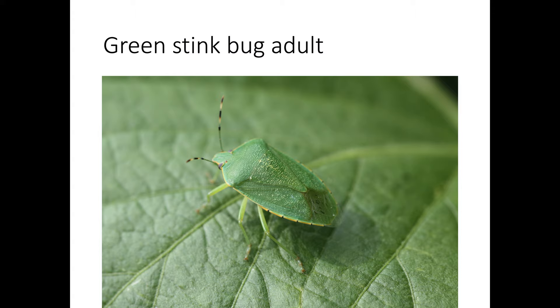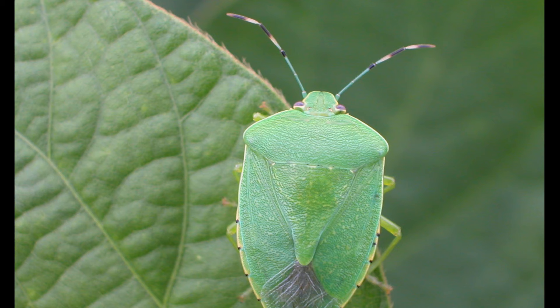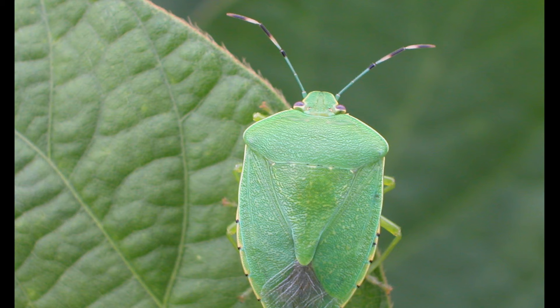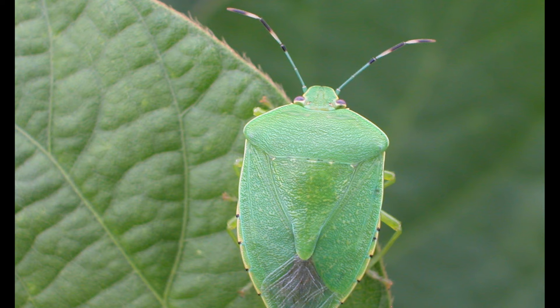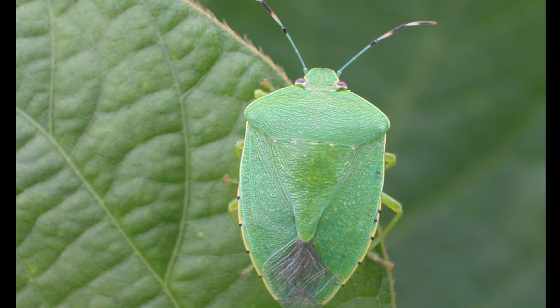Green stink bugs are the number one common insect pest in Tennessee soybeans. Most are familiar with the green stink bug adults — they're large, showy, robust green insects. I like to think of them as the Incredible Hulk of the stink bug world. All stink bug pests are seed feeders, and populations tend to build throughout the growing season, often peaking around R5 or R6 when seeds are developing in the pods.